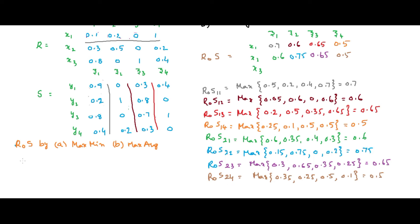Now R∘S(3,1), x3 and z1. Average of 0.8 and 0.9 is 1.7, so 1.7 divided by 2 is 0.85. Average of 1 and 0.8 is 1.8, divided by 2 is 0.9. Average of 0.4 and 0.4 is 0.4, divided by 2 is 0.2. The maximum value is 0.9.